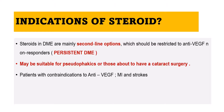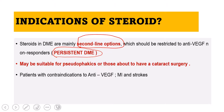What are the specific indications of steroids? Steroids are mainly used as a second-line option — the first line being anti-VEGF agents. Steroids are used in patients not responding to anti-VEGF treatment, particularly with persistent diabetic macular edema. They may also be suitable for patients who are pseudophakic or those going to have cataract surgery, since the cataract side effect will not be of much significance in those cases.